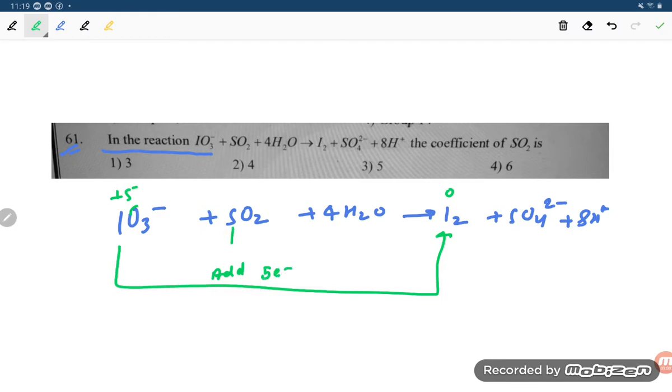And here if you talk about SO2 to SO4, so plus 4 to plus 6. So how much? Plus 4 to plus 6, so loss 4 electrons.